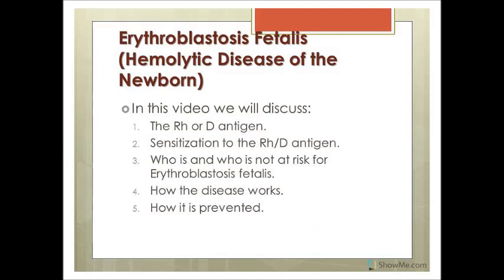First, we want to review our Rh or D antigens. The Rh antigen of red blood cells includes a variety of antigens, but D is the most important one. This is the one referenced when we talk about Rh positive and negative.